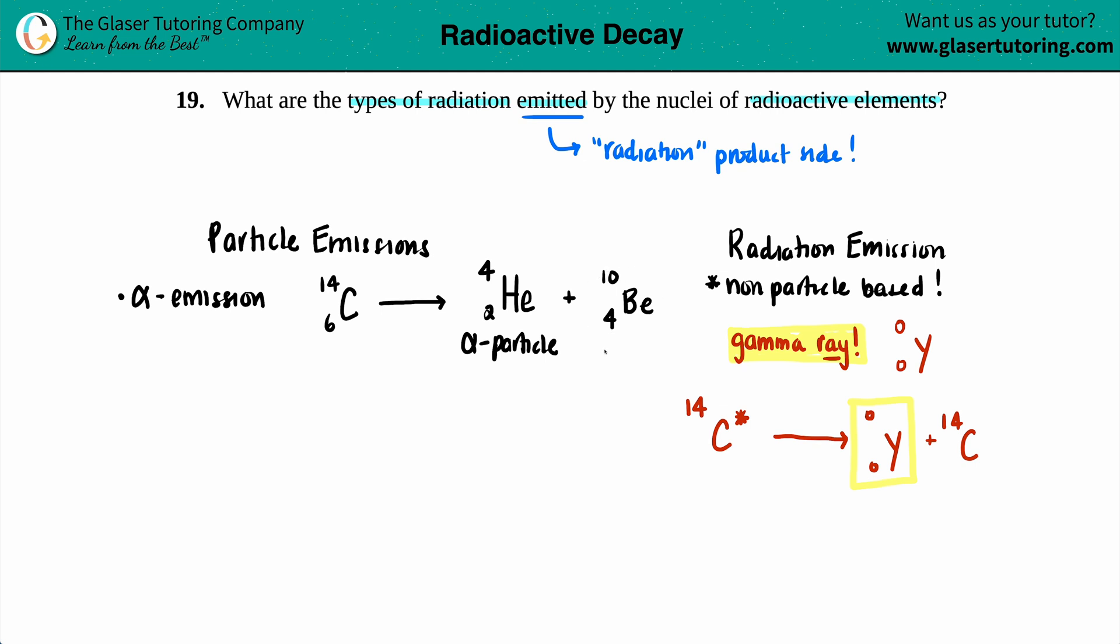This is basically what you have to focus on for this question at least. So one of your emissions is an alpha emission, where you will be releasing a helium as your products.